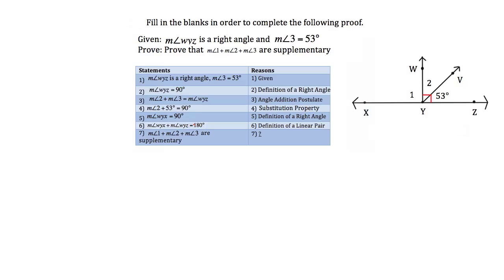The last statement is what we needed to prove: measure angle 1 plus measure angle 2 plus measure angle 3 are supplementary. Angles 1, 2, and 3 correspond to the regions within right angles WYX and WYZ, and they add up to 180 degrees. That is the definition of supplementary angles — angles that add up to 180 degrees.